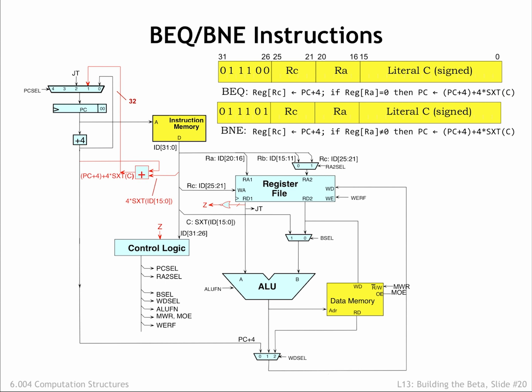The output of the offset adder becomes the 1 input to the PC cell mux where, if the branch is taken, it will become the next value of the PC. Note that multiplying by 4 is easily accomplished by shifting the literal 2 bits to the left, which inserts 2 zero bits at the low-order end of the value.